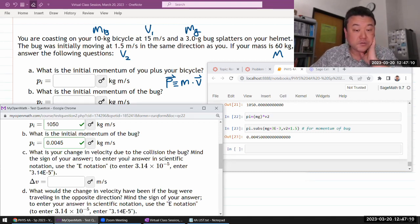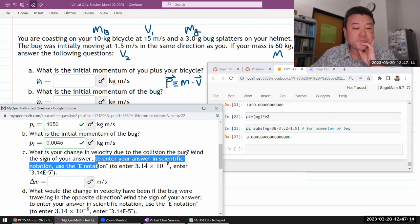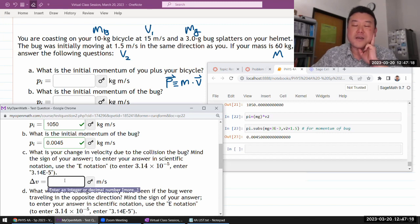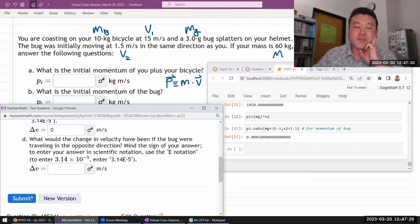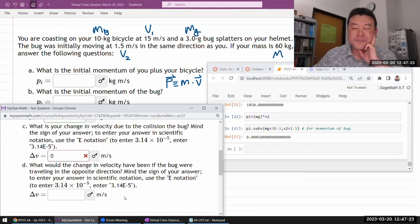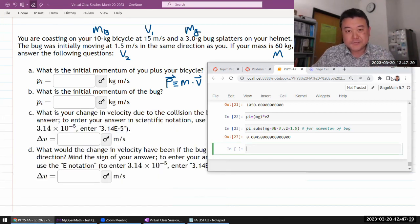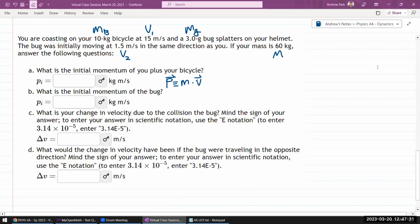It asks, what is your change in velocity due to collision with the bug? Mind the sign of the answer. Oh, yeah, because they're asking for change in, so I think if I say 0, it'll tell me it's wrong. Because, yeah. Even though it's going to be a very small number, they don't want me to use 0.